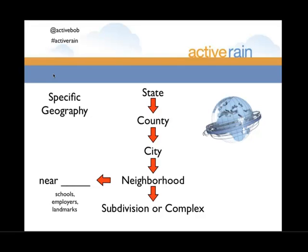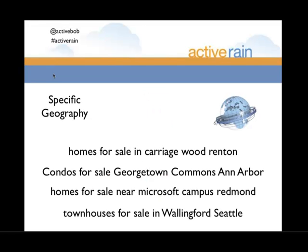So here are examples of getting more specific with geography: 'homes for sale in Carriagewood' (a subdivision name), 'condos for sale in [specific condo complex name],' 'homes for sale near the Microsoft campus.' These are the kinds of specific geographic anchors that work well.